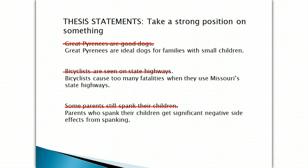Similarly, "Bicycles are seen on state highways" — well, they either are or they're not, and you can prove that just by going out and looking for 24 hours. So that's not a good topic sentence. But "Bicyclists cause too many fatalities when they use Missouri's highways" is a stronger topic sentence or thesis statement. "Cause too many fatalities" makes it stronger and worthy of a paragraph or possibly an essay. And finally, "Some parents still spank their children" is either a statement of fact or a false fact, but it doesn't require much development. Stronger would be: "Parents who spank their children get significant negative side effects from spanking." That's the attitude part — "get significant negative side effects."